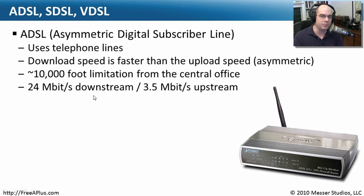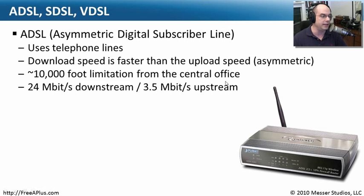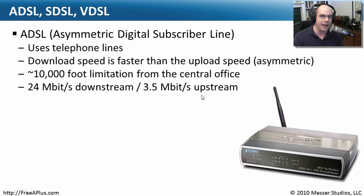Because of that, your speeds are a lot slower on the upstream side. There are also distance limitations — about 10,000 feet from the central office. Once you get farther away, your signal strength begins to degrade. You can't quite get that digital signal all the way down these very old-style phone lines. Generally, you can have speeds up to 24 megabits per second down and 3.5 megabits up, though the vast majority of ADSL installations run a lot slower than that.